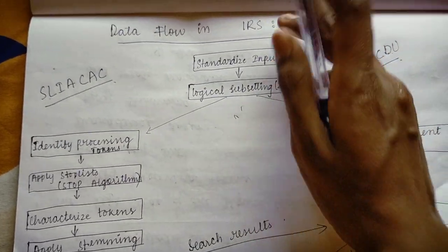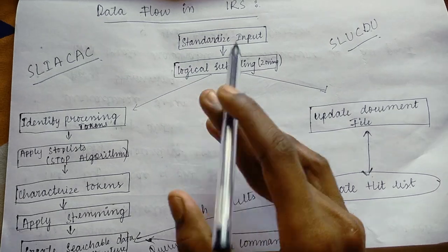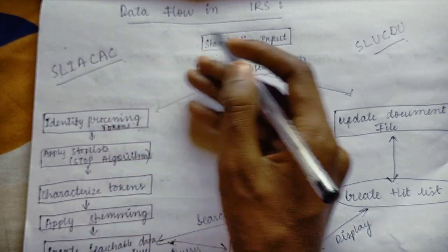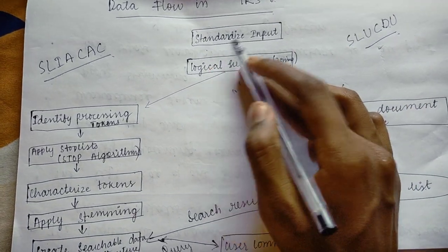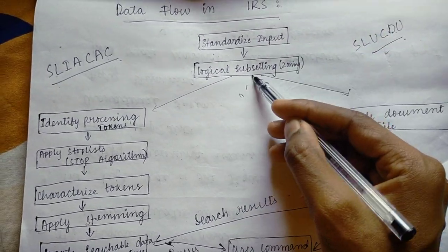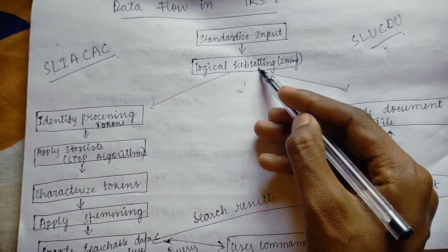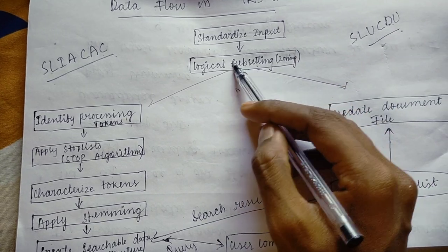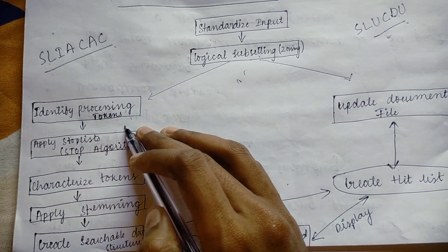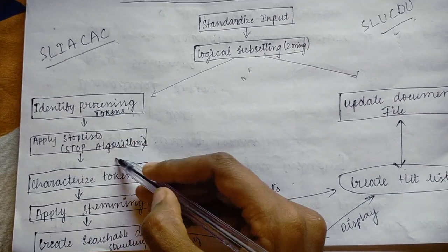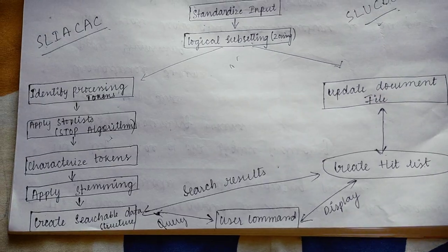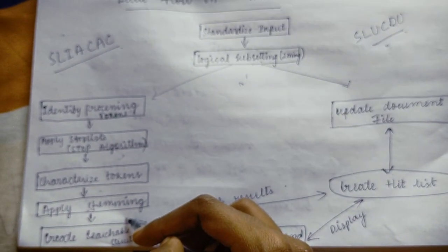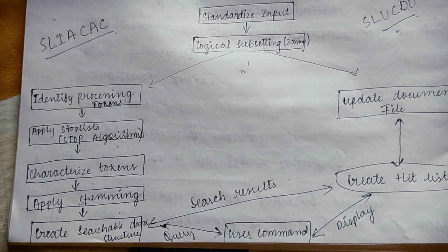The data flow in IRS is very important. After writing the automatic indexing topic, please also write this data flow. The steps are: first, standardized input — you give some input to the system. Then it does zoning, which is like scanning or logical subsetting. Then it identifies processing tokens — which kind of tokens are being used. Then it applies the stop list algorithm, stopping certain tokens. Then it characterizes tokens again.